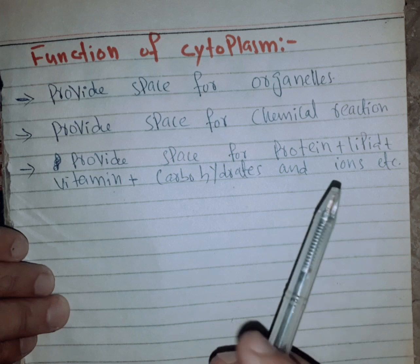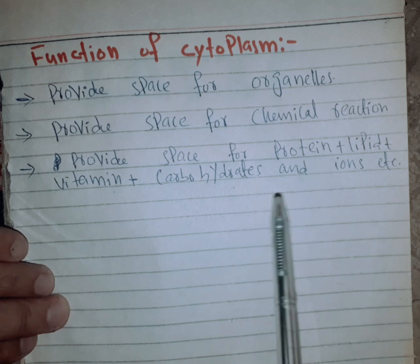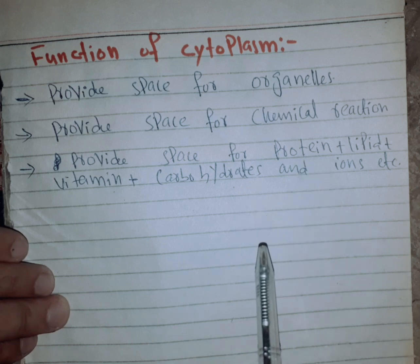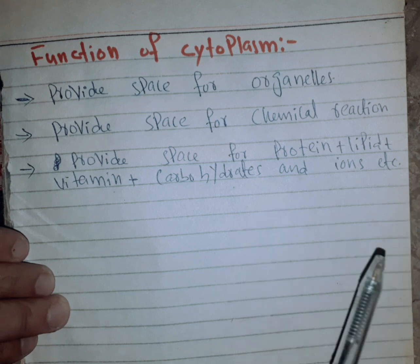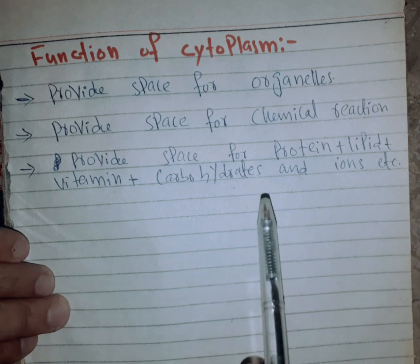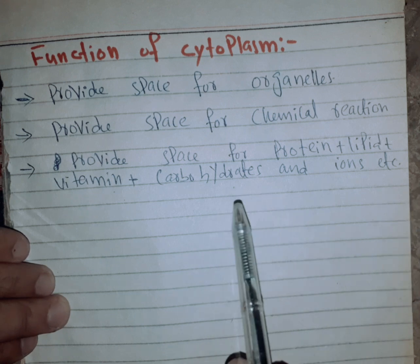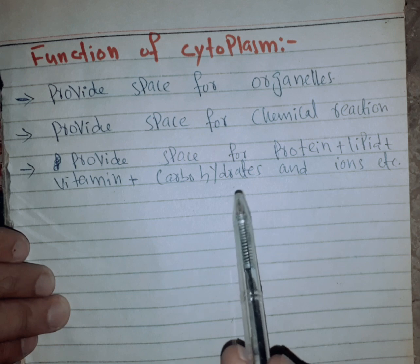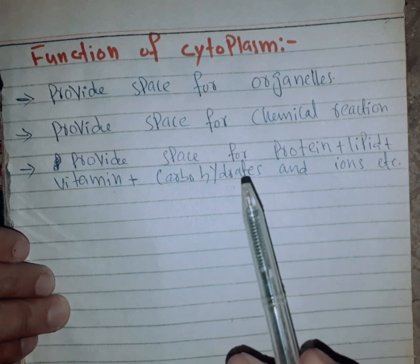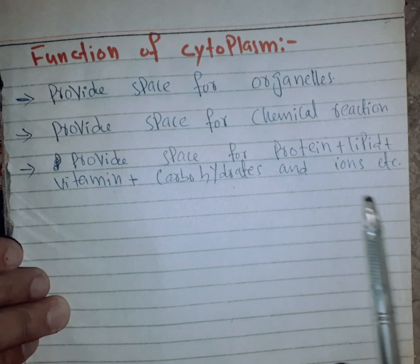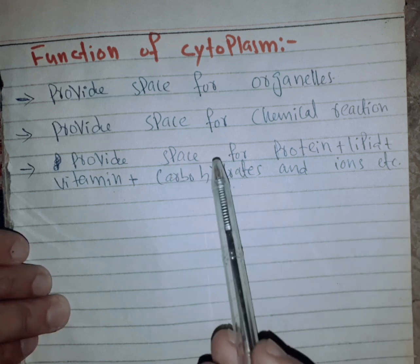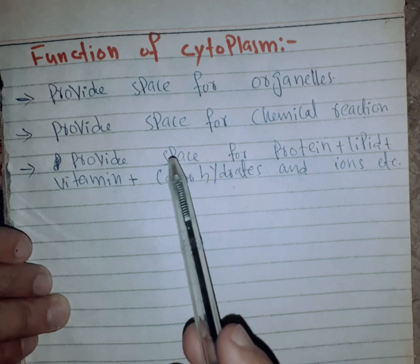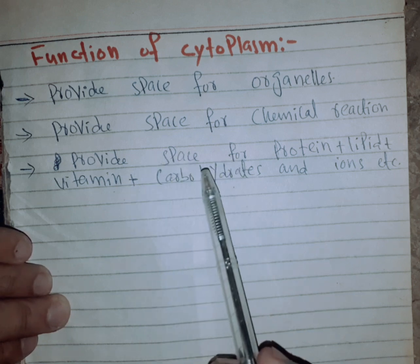Cytoplasm is located between the cell membrane and the nuclear membrane. It has three parts: cytosol, which is the liquid part; organelles including mitochondria, Golgi bodies, and protein hormones; and solid parts containing carbohydrates and lipids.